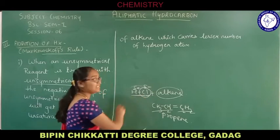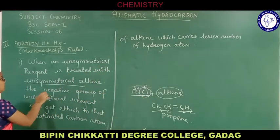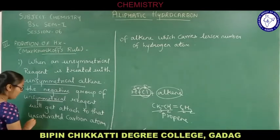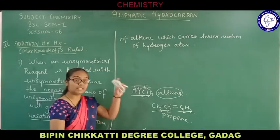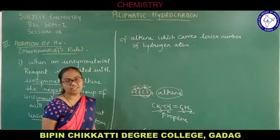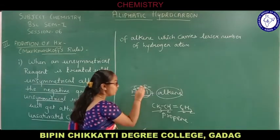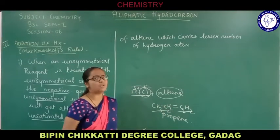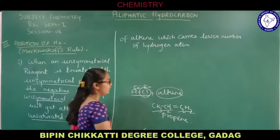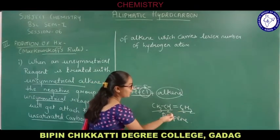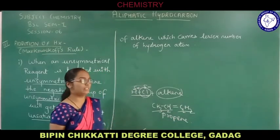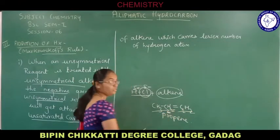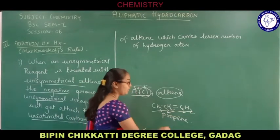The negative group of the unsymmetrical reagent will go and get attached to which carbon atom? It will attach to the unsaturated carbon atom of the alkene which is containing a lesser number of hydrogen atoms. Between carbon number one and carbon number two: carbon number one has two hydrogen atoms whereas carbon number two has one hydrogen atom.